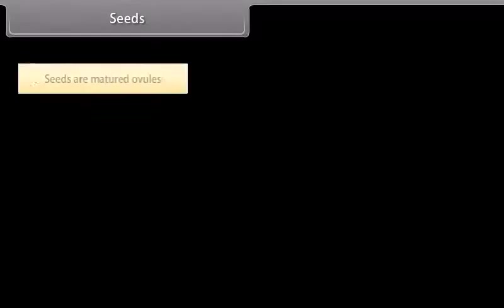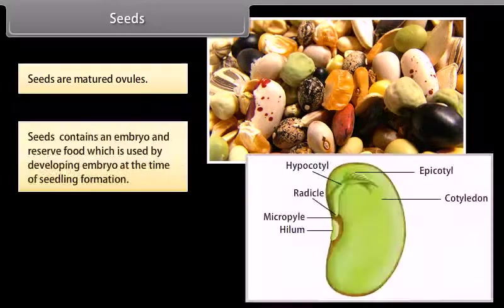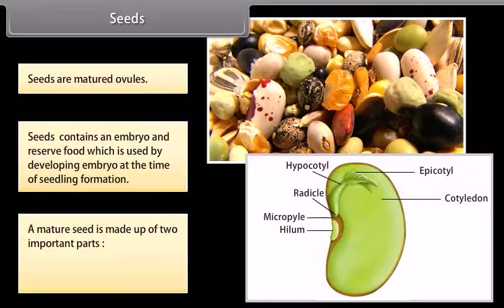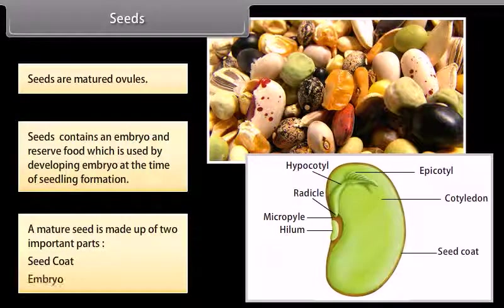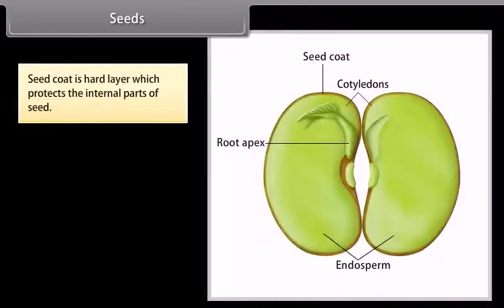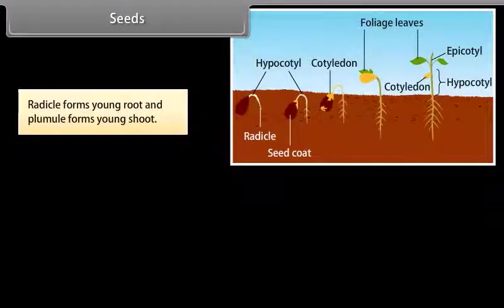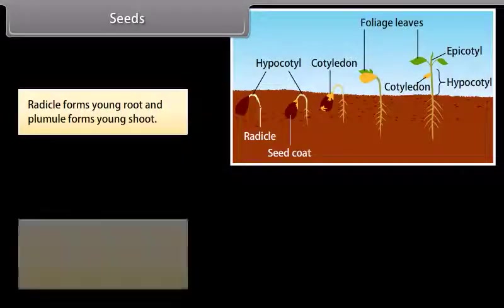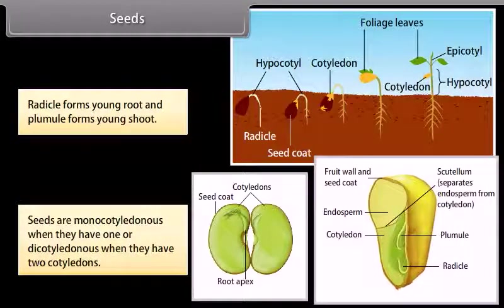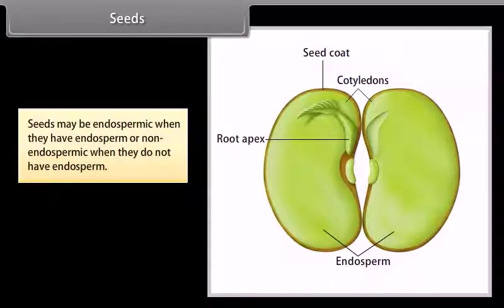Seeds are matured ovules. Seeds contain an embryo and reserve food which is used by the developing embryo at the time of seedling formation. A mature seed is made up of two important parts: seed coat and embryo. The seed coat is a hard layer which protects the internal parts of the seed. The embryo is made up of radicle, plumule, and cotyledons. The radicle forms the young root and the plumule forms the young shoot. Seeds are monocotyledonous when they have one cotyledon, or dicotyledonous when they have two. Seeds may be endospermic when they have endosperm, or non-endospermic when they do not.